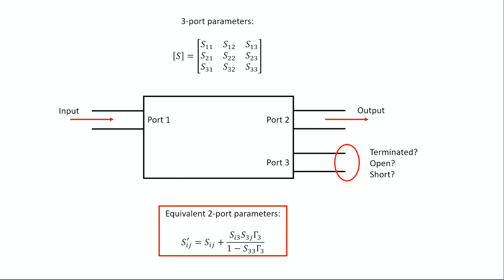On these three-port S-parameters, a little more context: when you use a two-port device like the Libre VNA to measure these S-parameters, what happens? If you input a signal at port one and measure the output at port two, the value you measure will depend on the termination applied at port three. Is it terminated with the characteristic impedance? Is it left open or short? All three options are going to affect the S-parameter you determine from this instrument. There is actually a relation you can use to relate the two-port S-parameters to the three-port S-parameters.